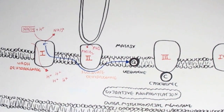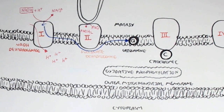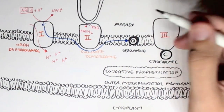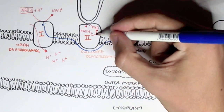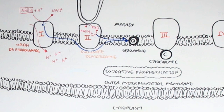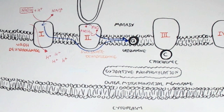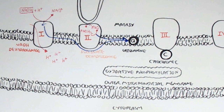Complex two, known as succinate dehydrogenase, will first reduce FAD to FADH2 from succinate in the Krebs cycle, but then it will oxidize FADH2 to steal its electrons and pass them on to ubiquinone. Something very important to understand is that ubiquinone can only carry electrons either from NADH or from FADH — it can't carry electrons from both at the same time. So electrons from NADH and FADH are carried by ubiquinone separately. To make this easier, we'll follow the electrons obtained from NADH only.